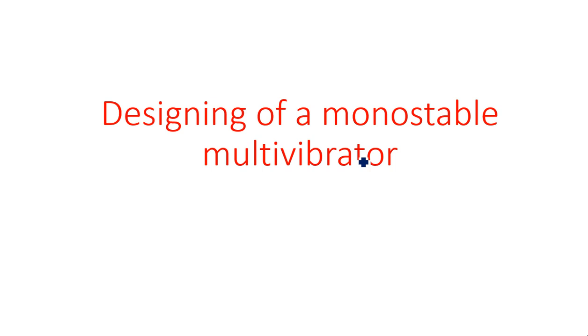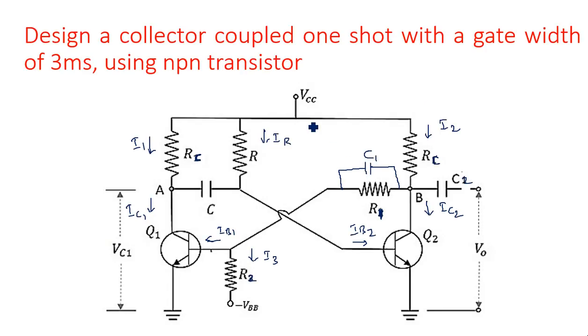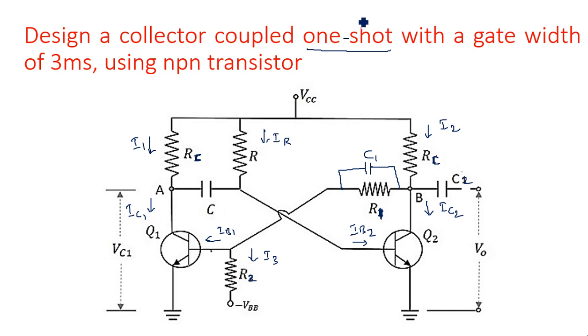In this video, let us see the designing of a monostable multivibrator — the second type. The question is: design a collector-coupled one-shot with a gate width of three milliseconds using an NPN transistor. Another name for monostable multivibrator is 'one-shot'.